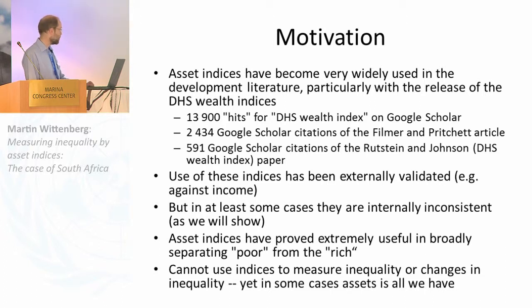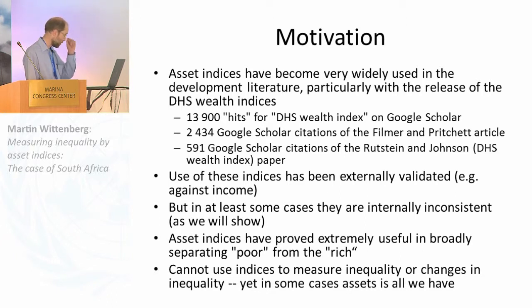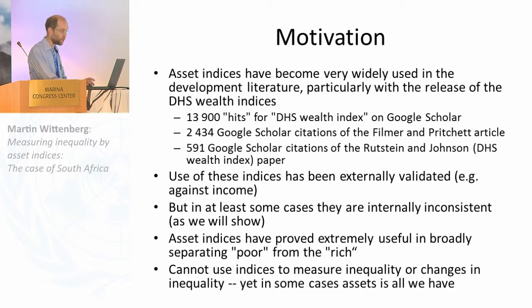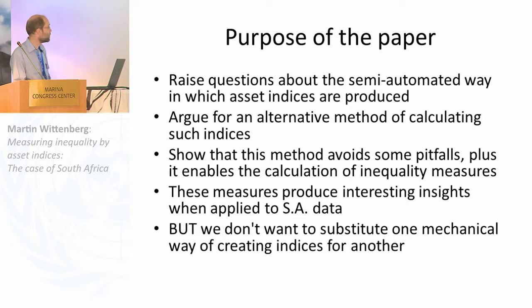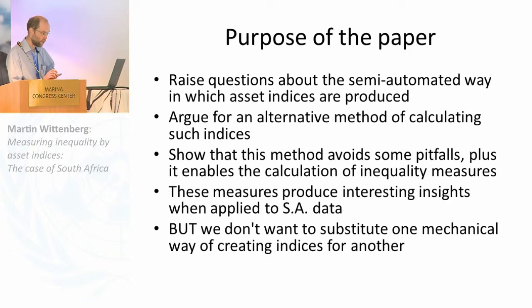Asset indices have proved useful in empirical work for separating out the poor from the rich, but one big limitation is that inequality work has thus far been impossible on them because of the way they're created. It would be nice to be able to say something about inequality in those cases where all we have are these asset indices. The main objective of the paper is to question how asset indices are created, argue for an alternative method, show that this method works, but then to warn that maybe it doesn't work quite as well as one would like — a cautious conclusion.